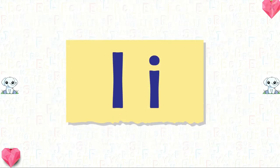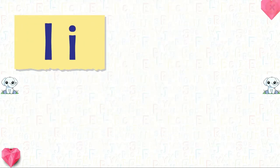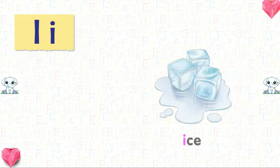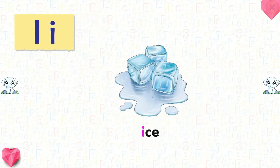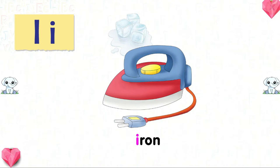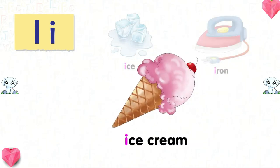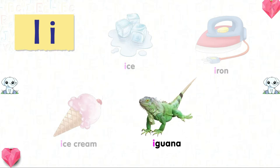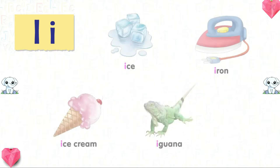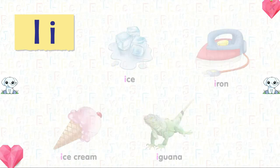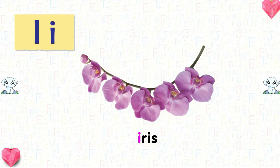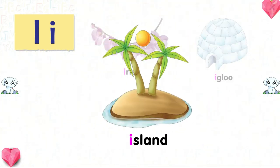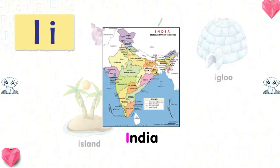I. I for insect. Eyes. Iron. Ice cream. Iguana. Iris. Igloo. Island. India.